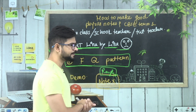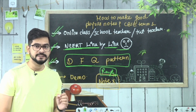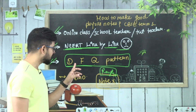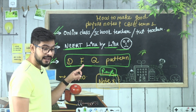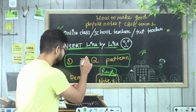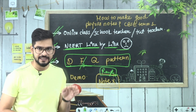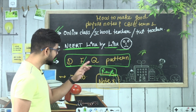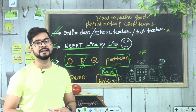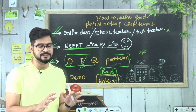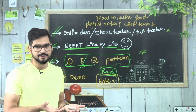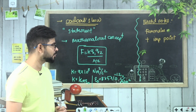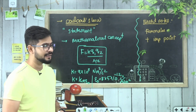Physics mein 90% derivation aur concept hote hain. Yahan D ka matlab derivation hai, F ka matlab formula hai - aur side mein S bhi likh deta hoon slash karke - short notes ya formula short notes. Aur phir Q ka matlab hai yahan par question. Main agli slide mein aapko bataunga ki karna kaise hai - bacha aapko apne best notes kaise banane hain aur kaise aap score lekar aa sakte ho.